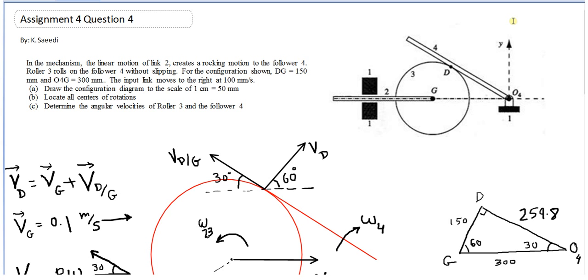I'm not going to use the instantaneous centers to solve the problem initially. I'm going to introduce a new method, so I'm not doing parts A and B. I'm going directly to solve part C: determine the angular velocities of roller 3 and follower 4.